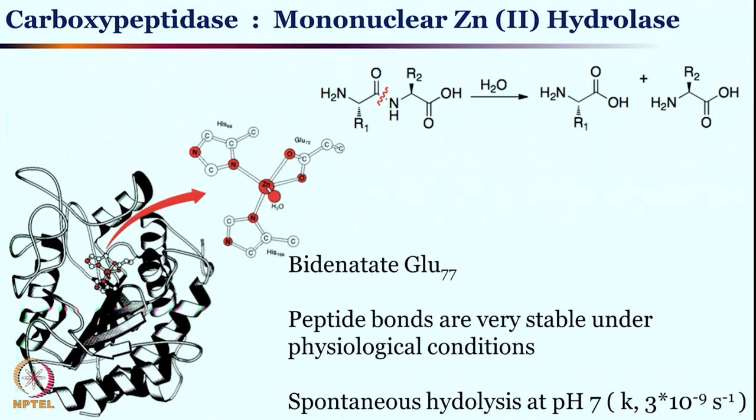In the last class we saw two zinc-based enzymes, and today we have seen one more — but none of these three zinc sites have exactly the same coordination. In each case, the coordination complexes that nature has designed are completely different. Although the metal is the same, one common feature is that they have at least one histidine in the majority of cases, but more interestingly the ligand systems are different for different enzymes.